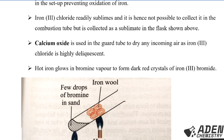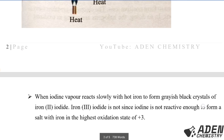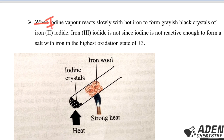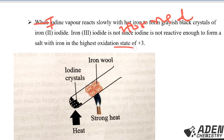Hot iron glows in bromine vapor to form dark red crystals of iron(III) bromide. Iodine vapor reacts slowly with hot iron to form greyish-black crystals of iron(II) iodide — note that with chlorine we get iron(III) chloride, with bromine we get iron(III) bromide, but with iodine we only get iron(II) iodide, because iodine is not reactive enough to oxidize iron to its highest oxidation state to form iron(III) iodide.